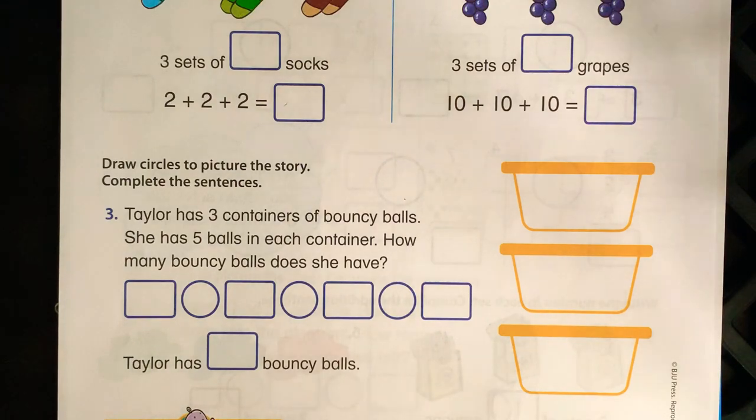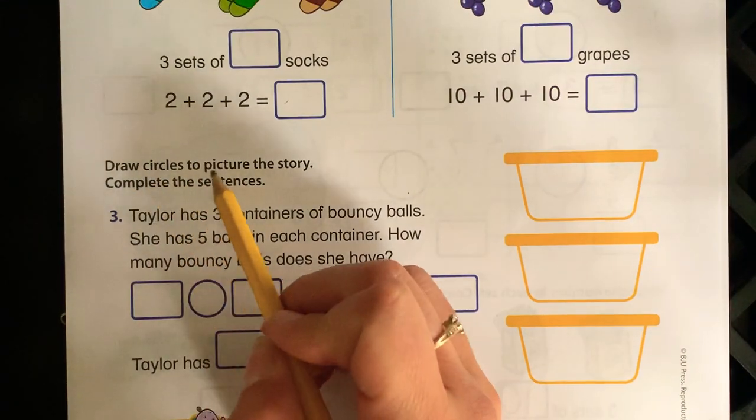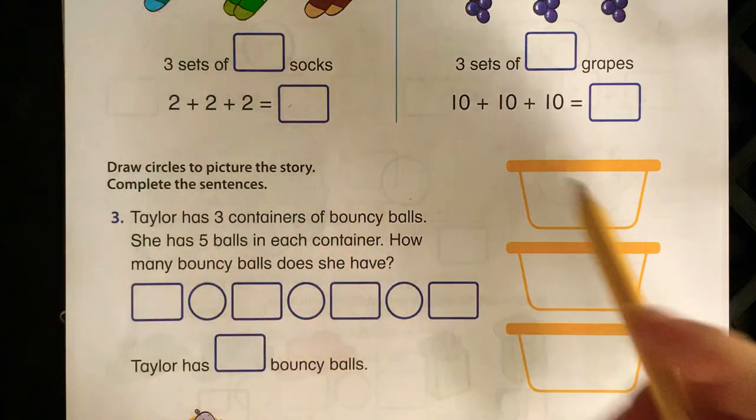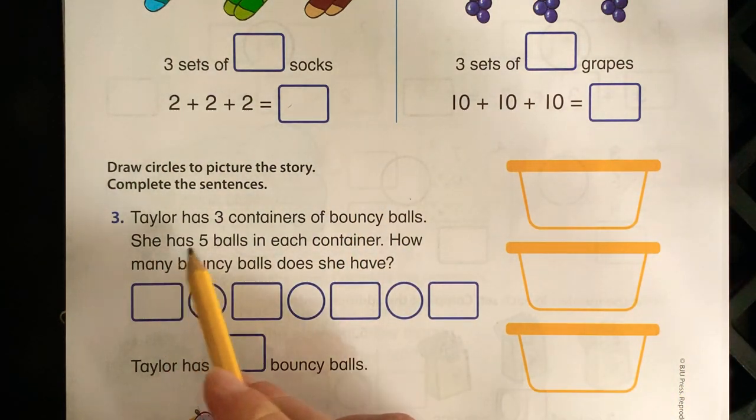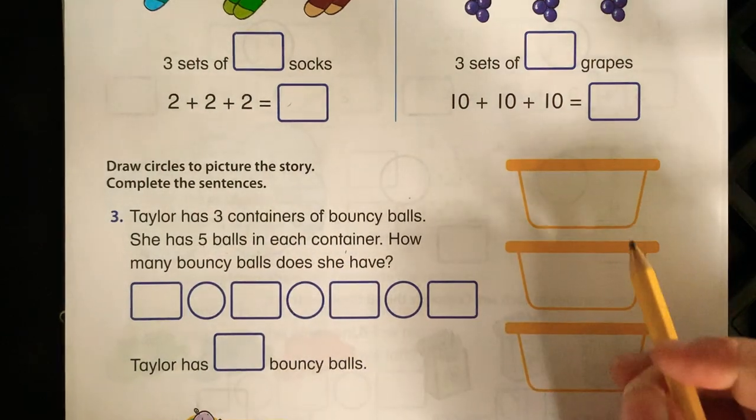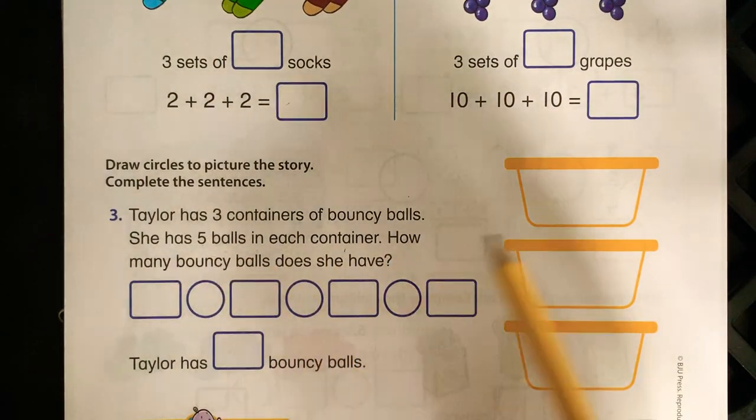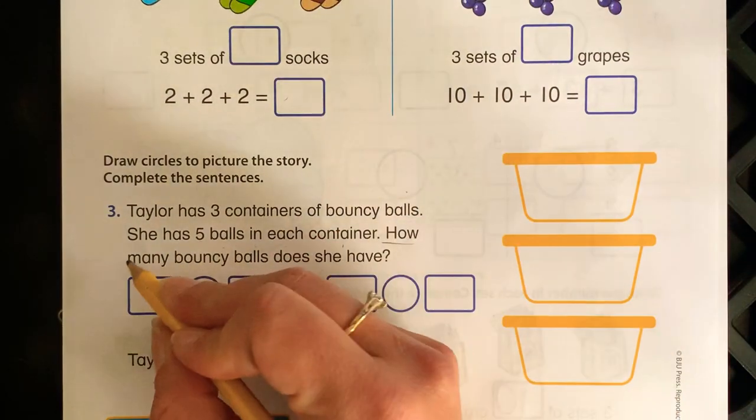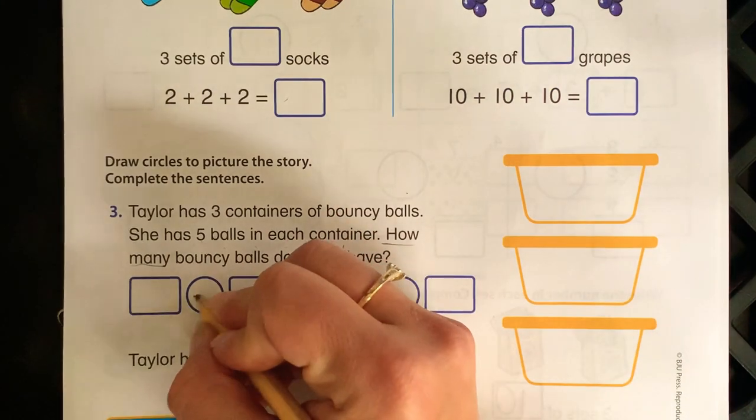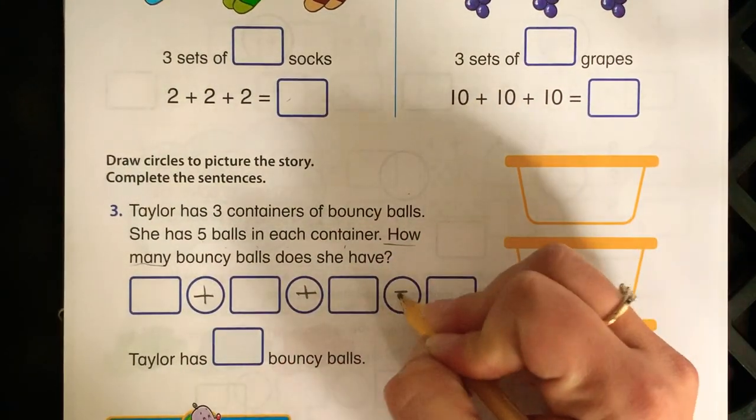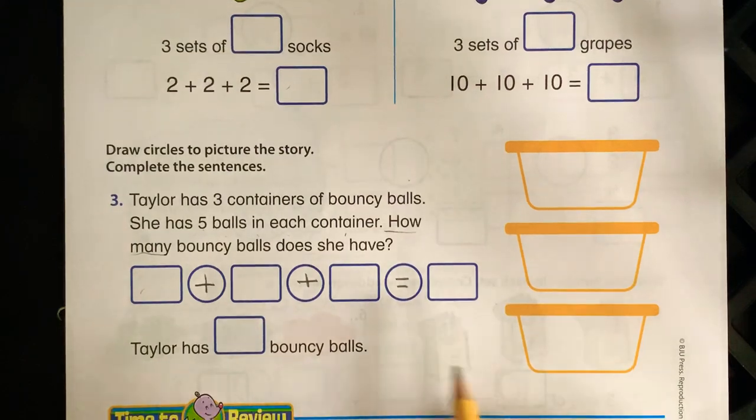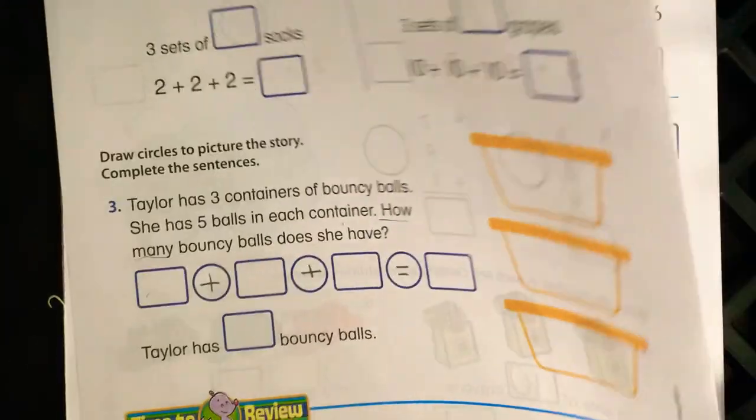On the middle of the back page, I think it's exactly what we just did on the front with those plates of eggs. Draw circles to picture the story and complete the sentences. Taylor has three containers of bouncy balls: one, two, three. They're the containers. She has five balls in each container. So you need to draw five balls in each container - five here, five here, and five there. How many bouncy balls does she have? They're asking us, how many does she have? That tells us that we're adding. So you can fill that in and then add them together. You have the five plus five plus five equals blank. Then tell me the total. Don't forget to draw them in the containers.